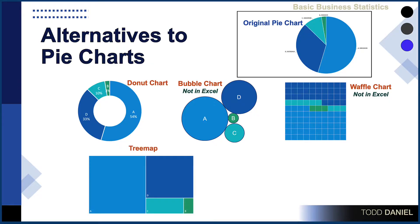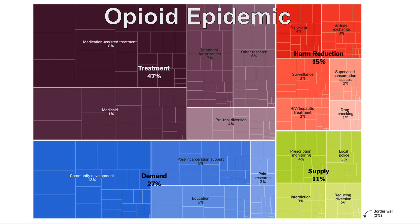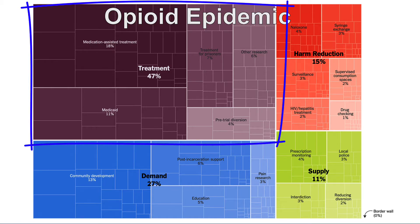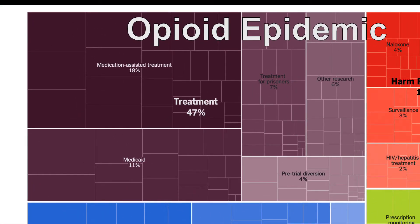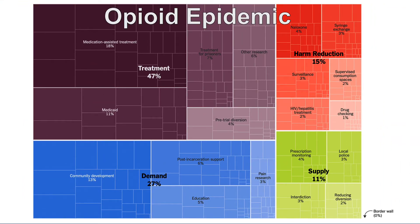Let me show you some better displays you could use instead. This one is called a tree map. In a tree map, we use squares to represent proportions, with larger squares meaning larger proportionality in the data set. This also improves our ability to compare, and a tree map can further be subdivided. In this example, addiction medicine specialists were asked what interventions would do the most to reduce opioid addiction in America. 47% recommended treatment — that's the set of reddish squares.